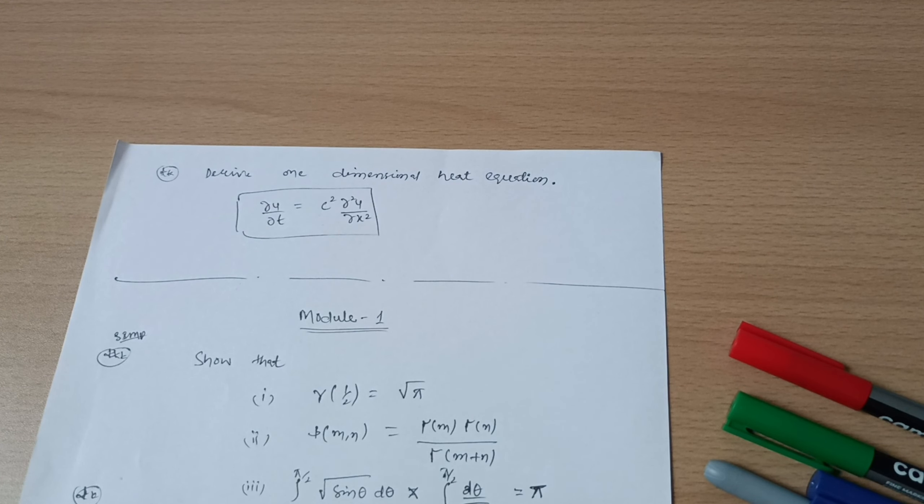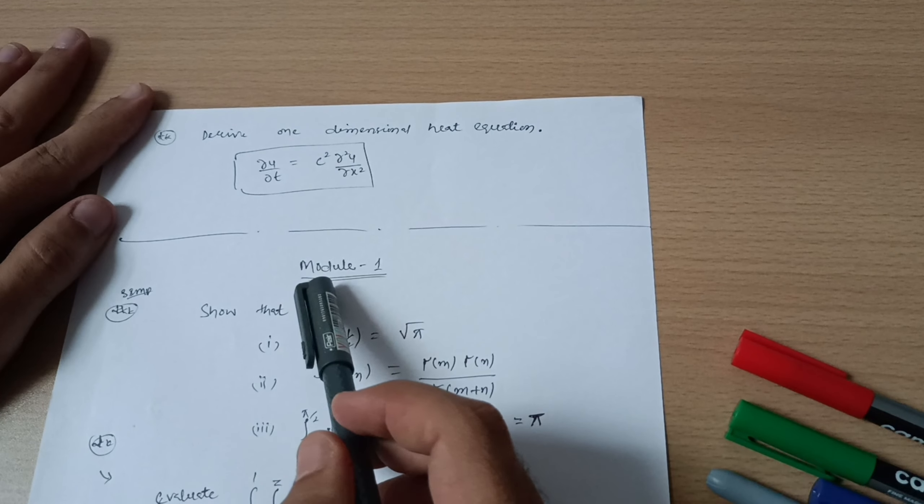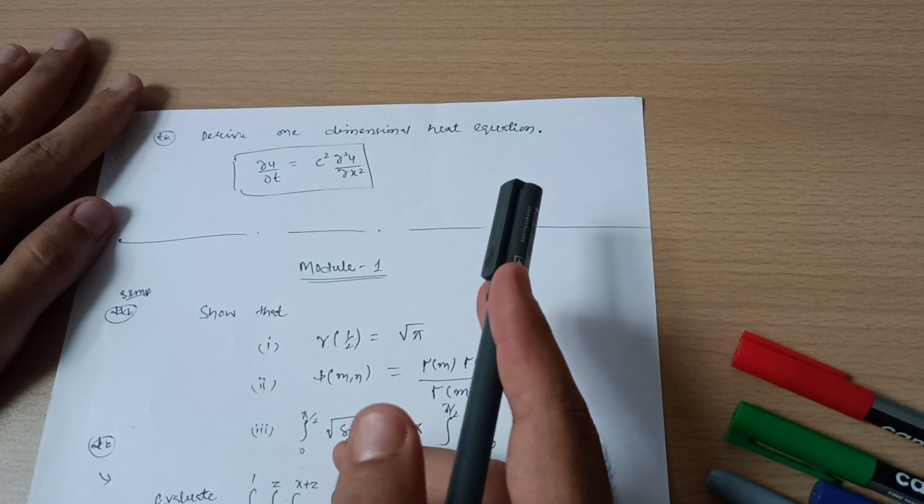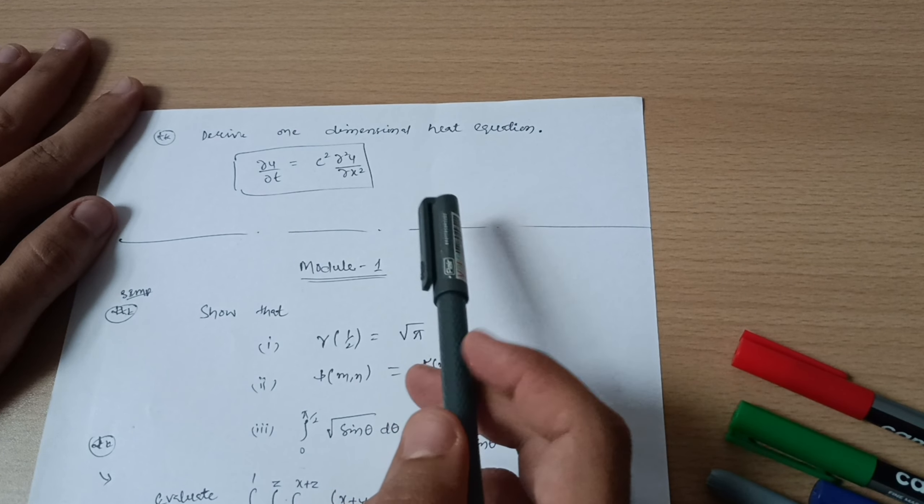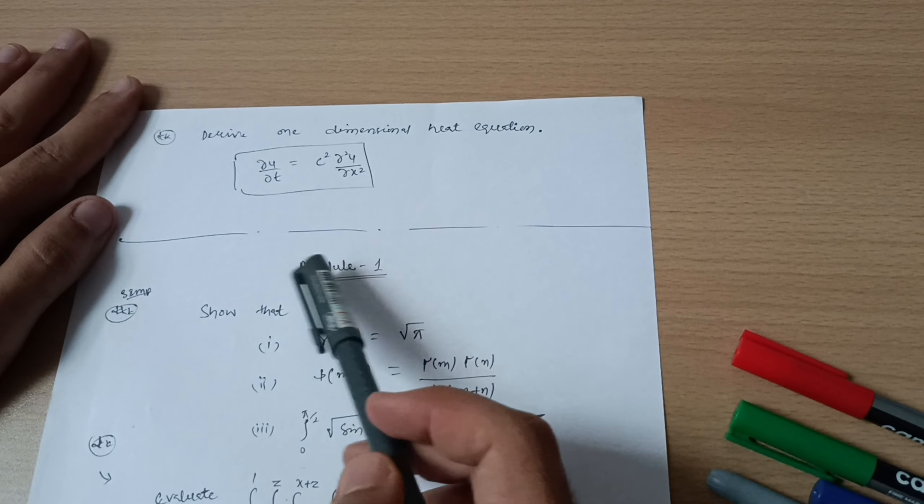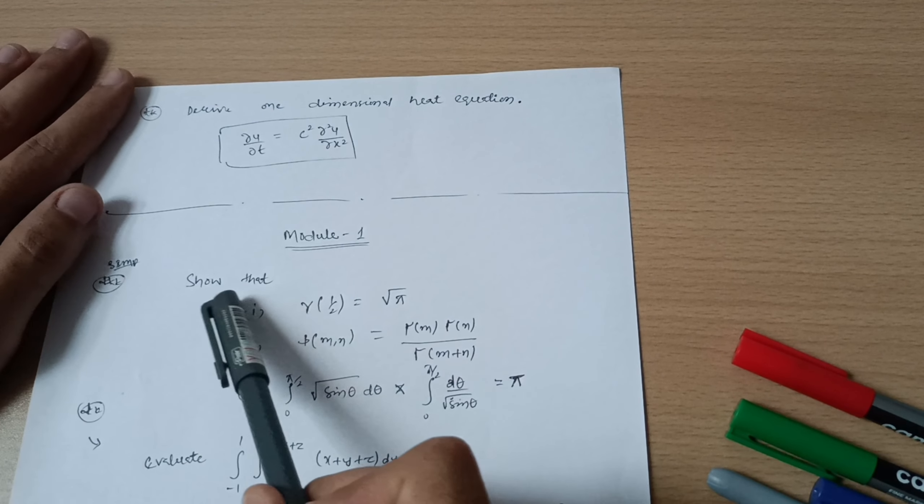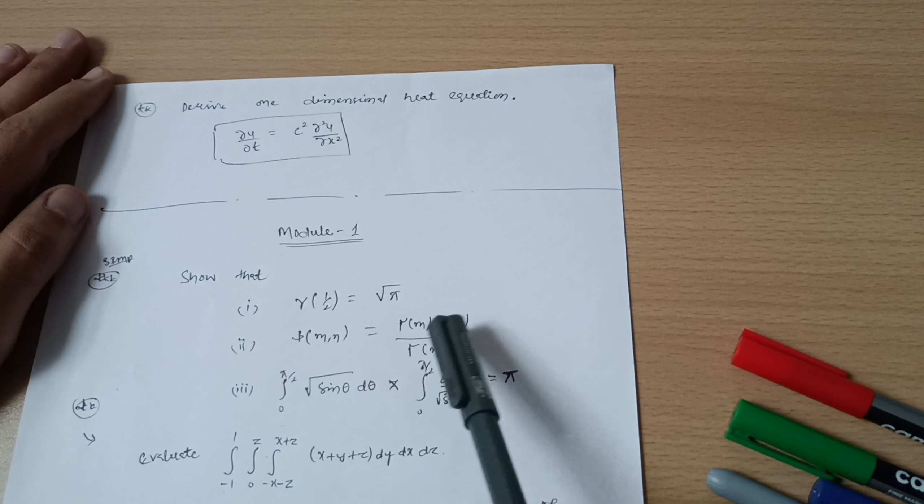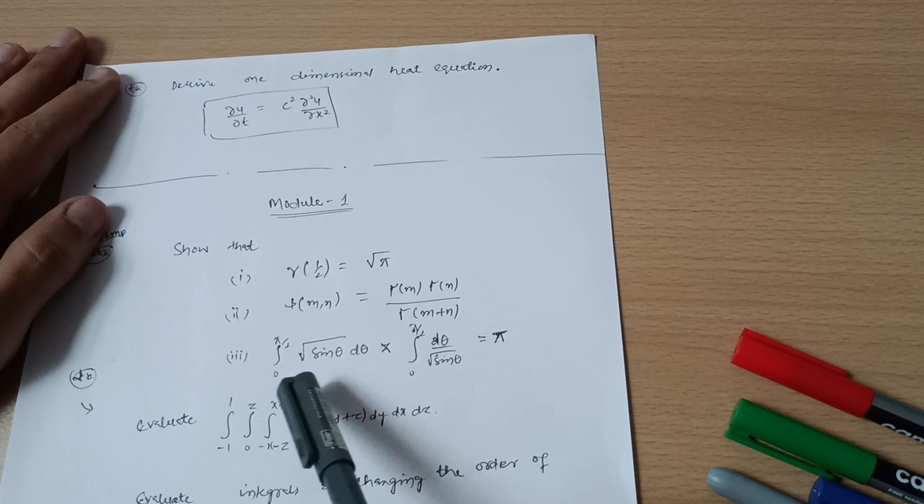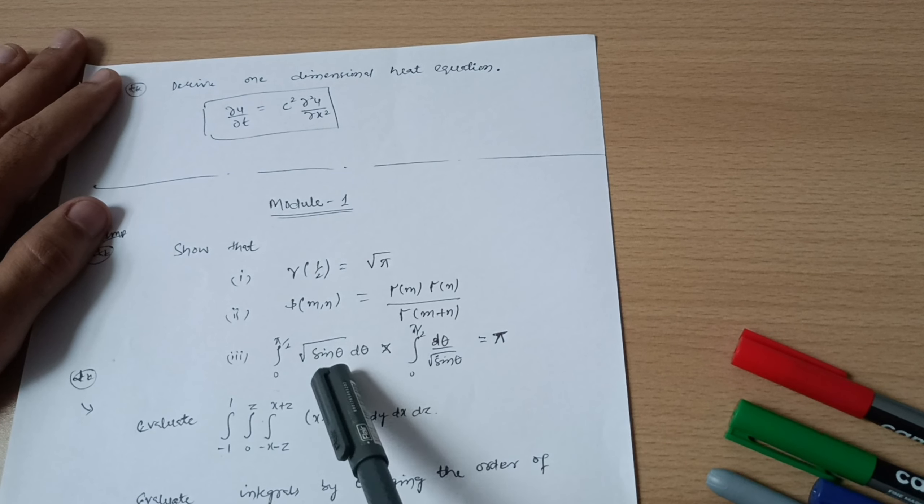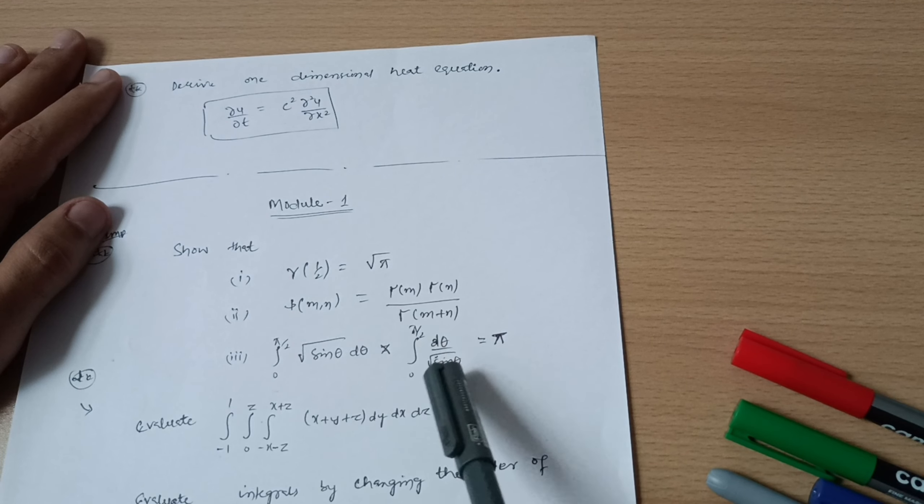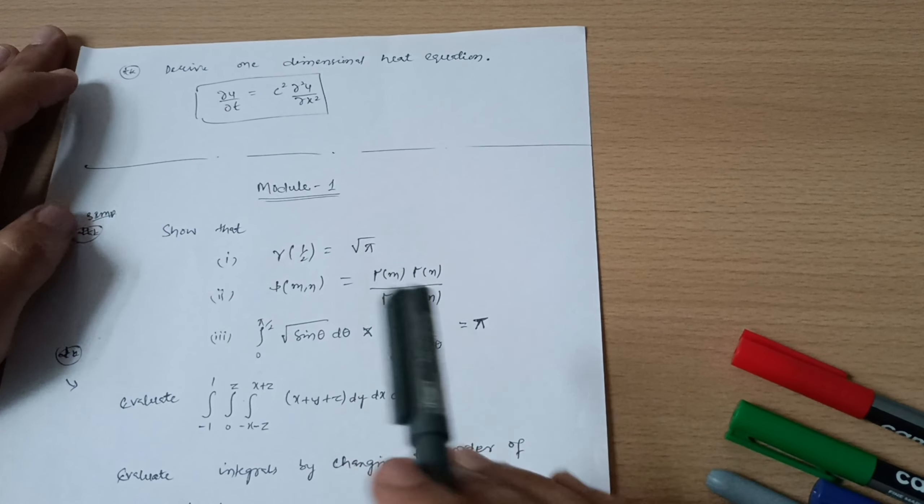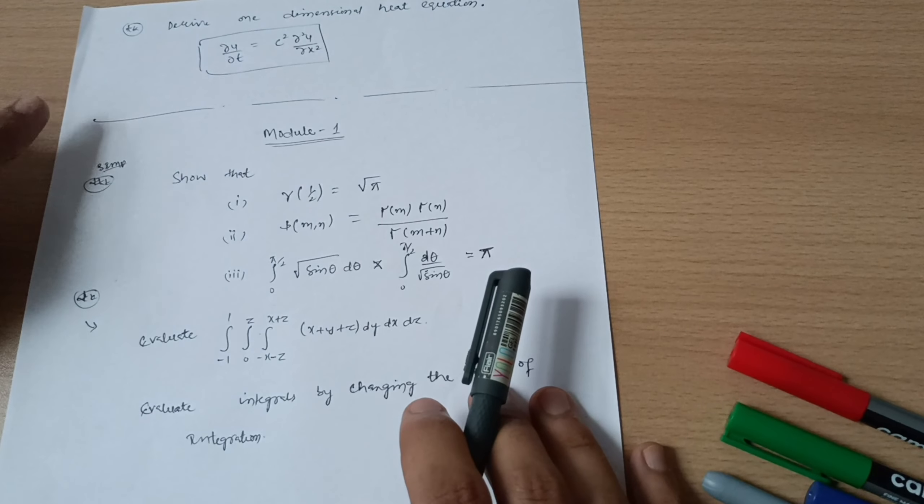Last but not least is Module 1. I have already discussed the passing strategy: three modules are the passing modules, but you have to take one question from Module 3 and Module 1 also. In Module 1, cover some derivations: show that gamma of one by two equals root of pi, beta of m comma n equals gamma of m into gamma of n divided by gamma of m plus n. Also one derivation: 0 to pi by 2, integral under root of sine theta d theta multiplied by integral of 0 to pi by 2, d theta under root of sine theta equals pi. These three derivations, definitely one will come.